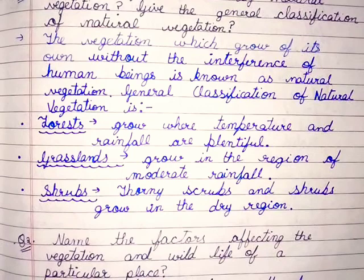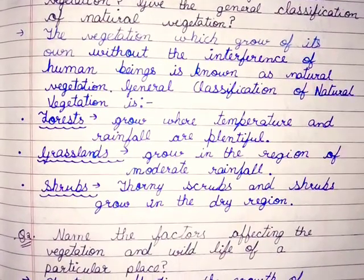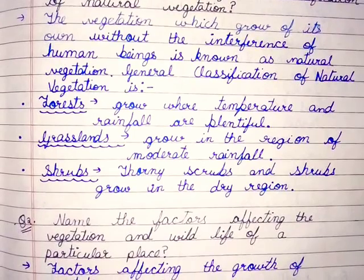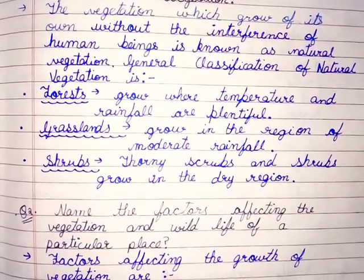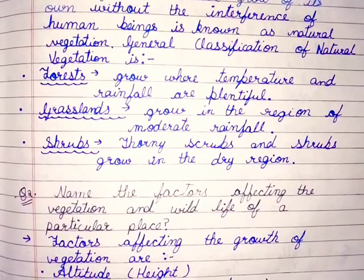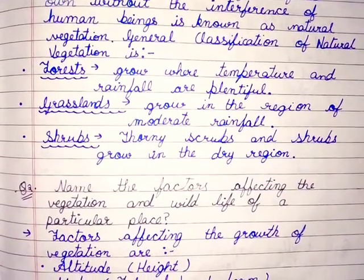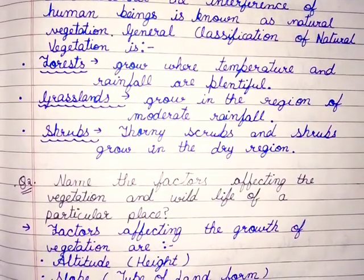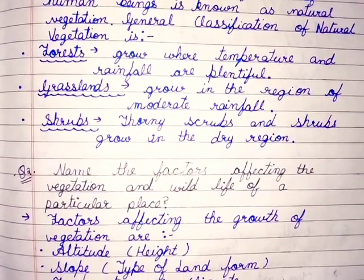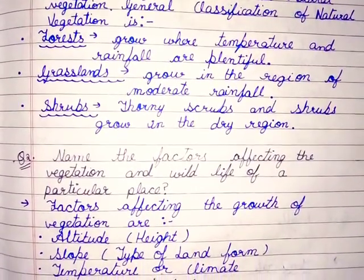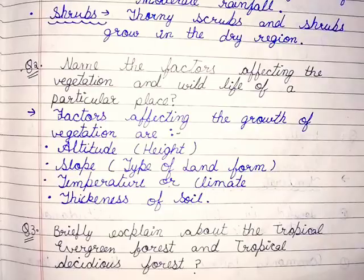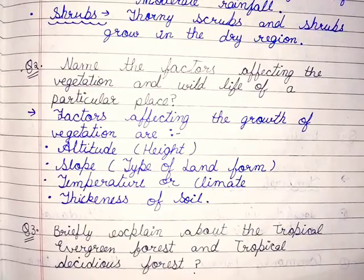Question number 2: name the factors affecting the vegetation and wildlife of a particular place. Answer: factors affecting the growth of vegetation are altitude, height, slope, type of landform, temperature or climate, and thickness of soil.